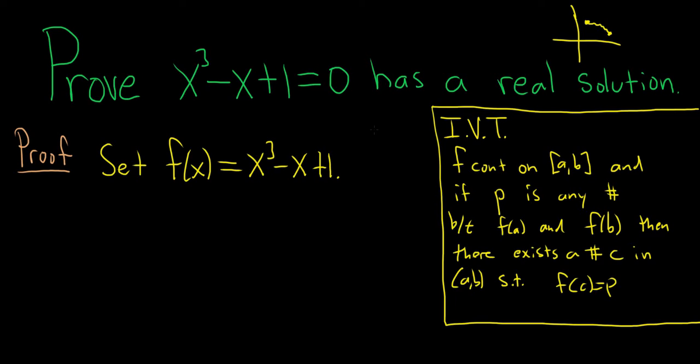Anyways, in this problem, we have to prove that this has a real solution. In other words, we somehow have to show that there is a number such that f of c is equal to 0. So we need to pick some values that we can plug into f that will make it change sign.